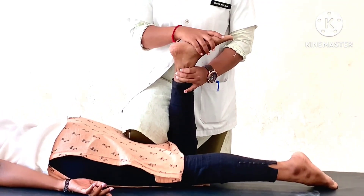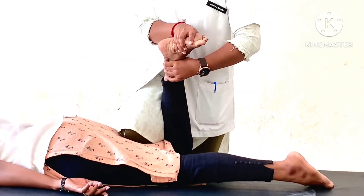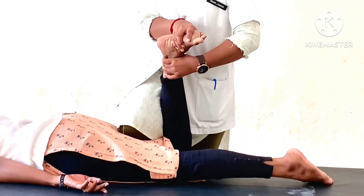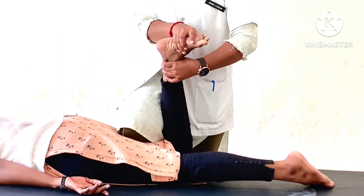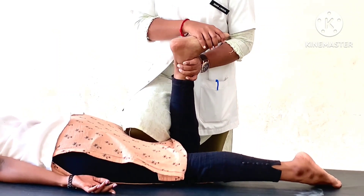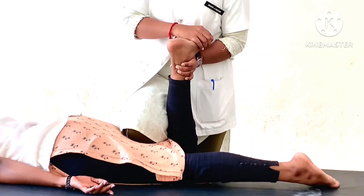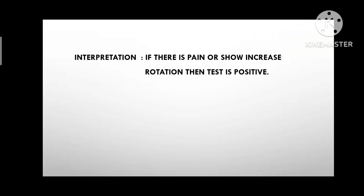The examiner rotates the tibia medially with distraction to check lateral cruciate ligament injury, and rotates the tibia laterally with distraction to check medial cruciate ligament injury. Interpretation: if there is pain or increased rotation, the test is positive.